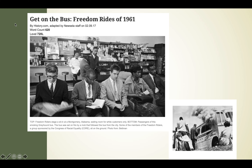The title of our text is 'Get on the Bus: Freedom Riders of 1961.' The 1960s had a lot of history going on. I see a picture that looks like it's from the 1960s - I see Black people and white people in what looks like a restaurant, sitting there. The caption reads: 'Top: Freedom Riders stage a sit-in at Montgomery, Alabama, waiting room for white customers only.' So that makes me think they're doing some kind of protest - sitting in where it was white customers only - which represents segregation.